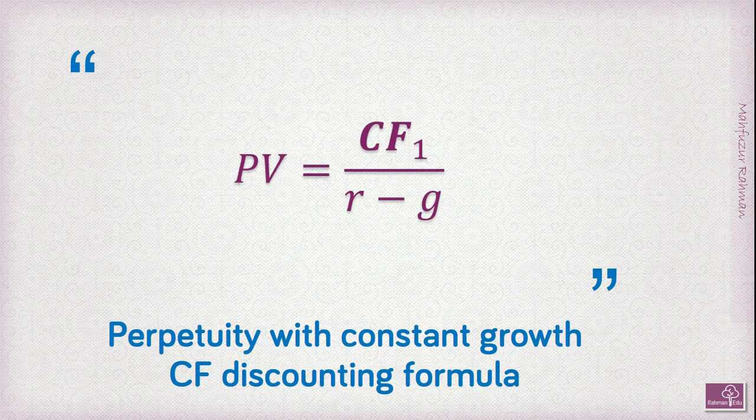Our next formula is the perpetuity with growth formula, where present value equals CF1 divided by (r minus g), where g is the constant growth rate.